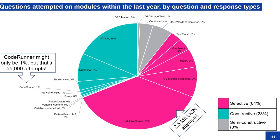Some of the constructive question types — and it's very good to see — the amount of constructive response questions have increased over the last five years. Some of them are still around 1%, like Code Runner, but there's still 55,000 attempts by students. So I'm just going to hand over to Tim to talk about embedded questions.